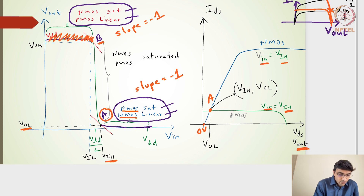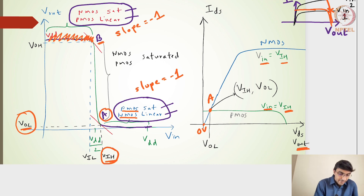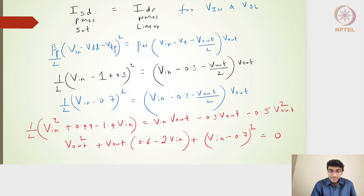Moving forward, we want to find point A — that means identifying VIH and VOL. To do this, I will equate the PMOS saturation current to the NMOS linear current.